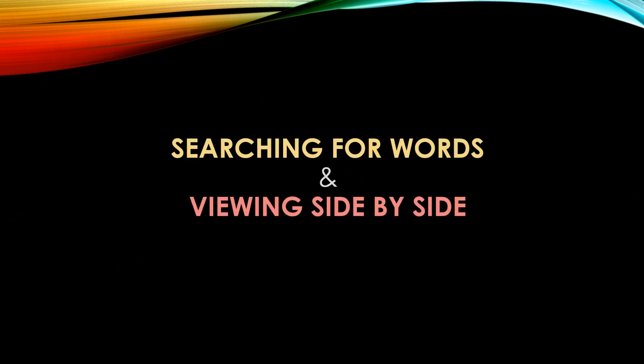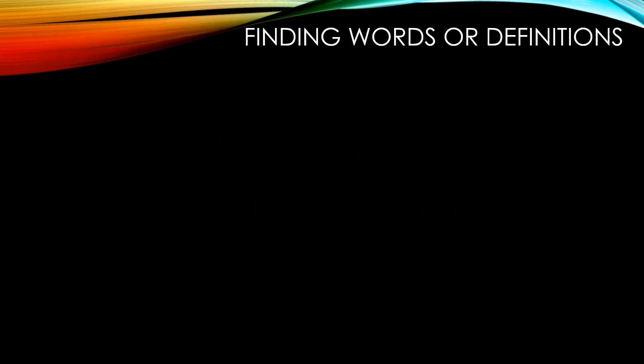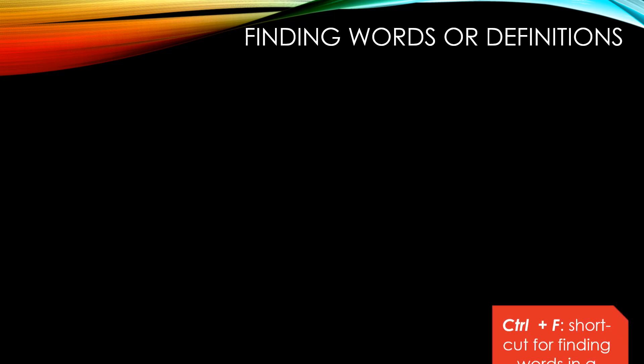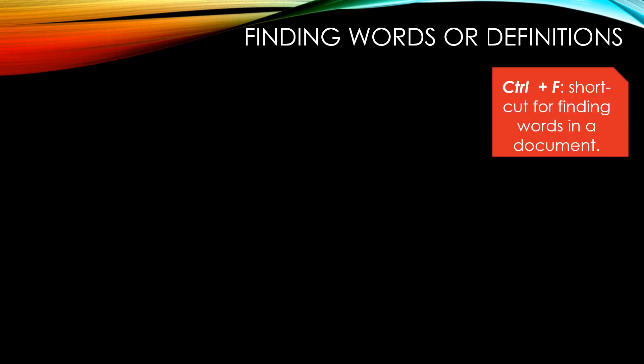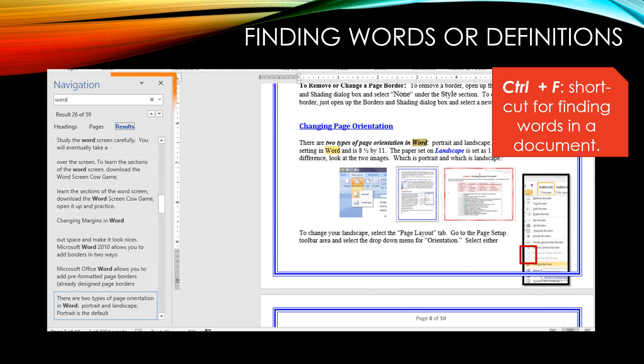Searching for words and viewing side by side. Finding words or definitions in a document. Control plus F is the shortcut for finding words in a document. When you hit Control plus F, the navigation bar will open on the left side so that you can search for words. If you type in the word you want to search for and hit Enter, you will get the results. The results will show all of that keyword in the document.